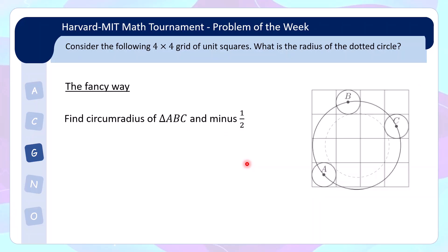So instead, we will be doing a fancy way to solve this problem. Now the fancy way involves looking at instead, the circumradius of triangle ABC, because we realize that if we look at this larger triangle, it has radius of the required dotted circle plus an additional half. So let us instead find the circumradius of triangle ABC.